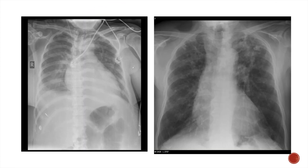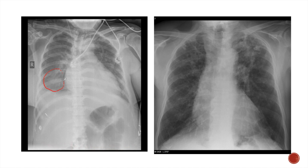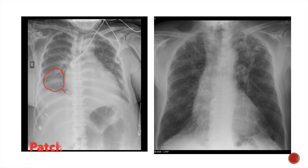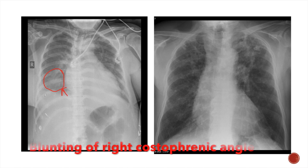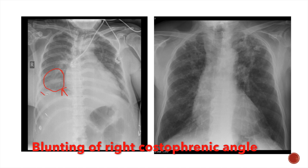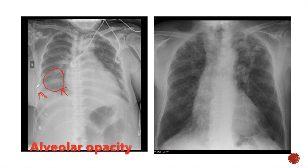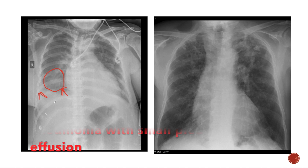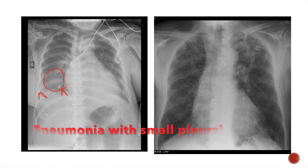Now take examples of these opacities. In the first X-ray we can see an opacity in the right lower zone. This opacity is unilateral and tends to coalesce, forming a patch. It is associated with blunting of the right costophrenic angle. This is an alveolar opacity, so this is a case of pneumonia with a small right-sided pleural effusion.